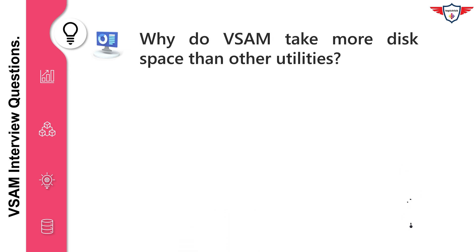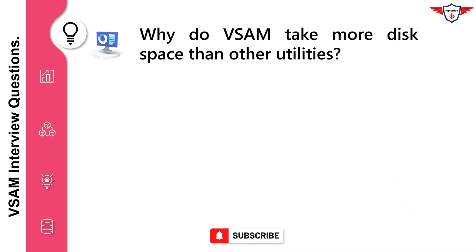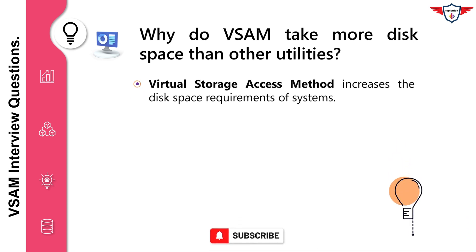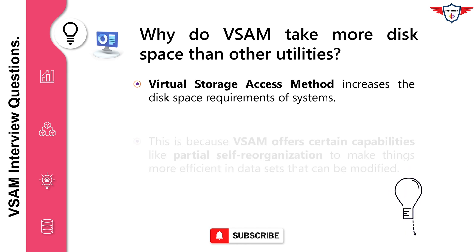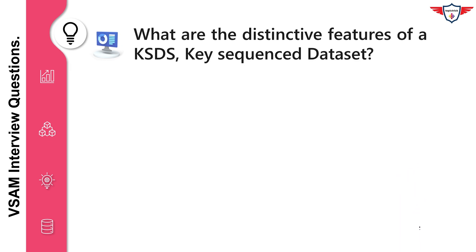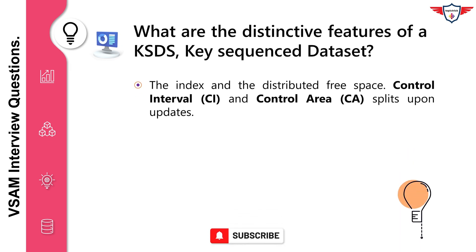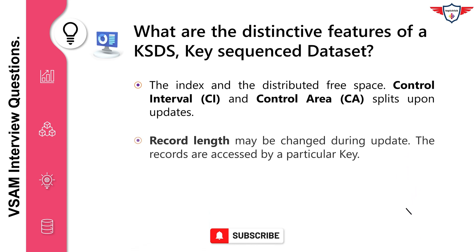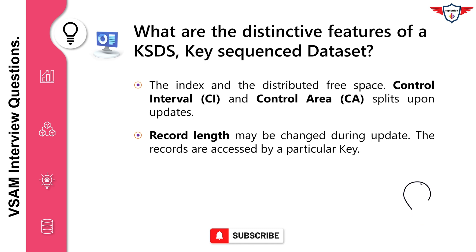Why does VSAM take more disk space than other utilities? VSAM increases the disk space requirements of systems because it offers certain capabilities like partial self-reorganization to make things more efficient in datasets. What are the distinctive features of a KSDS (Key Sequence Dataset)? The index and the distributed free space. Control interval (CI) and control area (CA) splits upon updates. Record length may be changed during update. The records are accessed by a particular key.